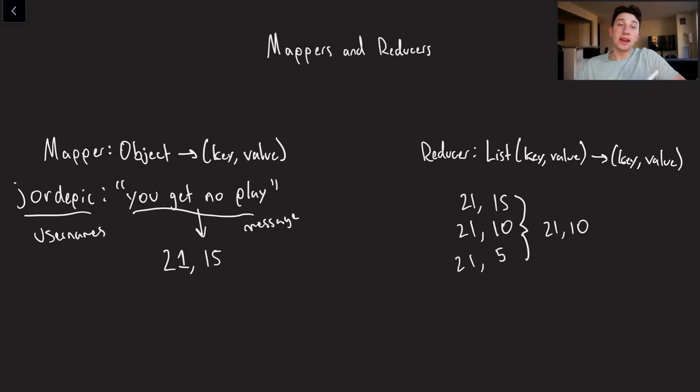And basically, we want to say, okay, for every single one of these username message combos, give me the user ID and give me the length of the message. That's really all a mapper is doing. It's just some arbitrary function that takes in an unstructured log, and then spits out some type of key value combo that you basically want for every single line of that log.